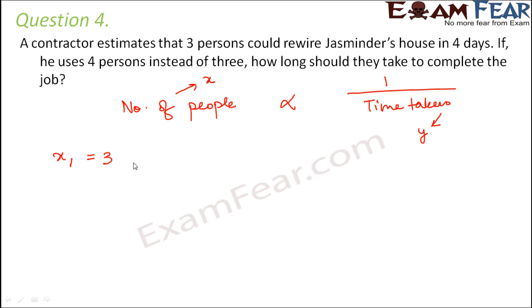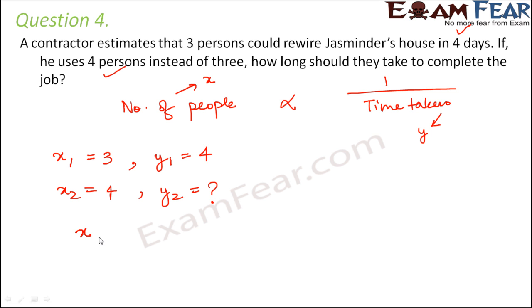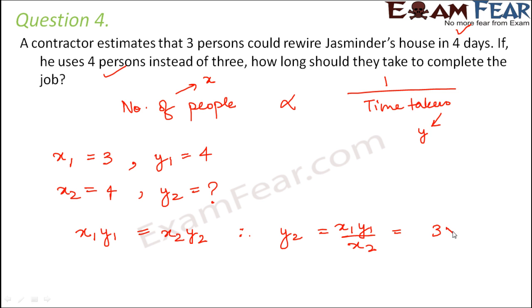Let number of people be X and time taken be Y. X1 is given as 3 and corresponding Y1 is 4 days. In the second scenario, X2 is equal to 4 persons and Y2 is what we need to calculate. Using inverse proportion: X1·Y1 = X2·Y2, so Y2 = X1·Y1 divided by X2 = 3 × 4 divided by 4, which equals 3. They would take 3 days if there are 4 persons.